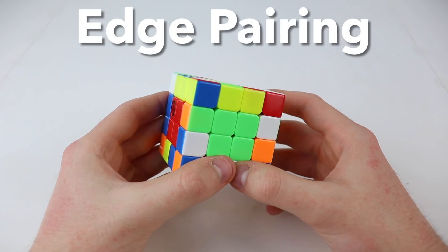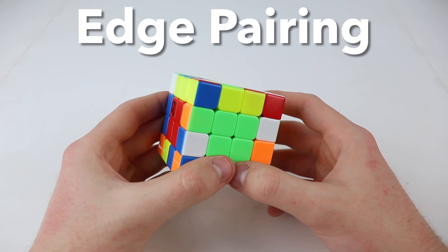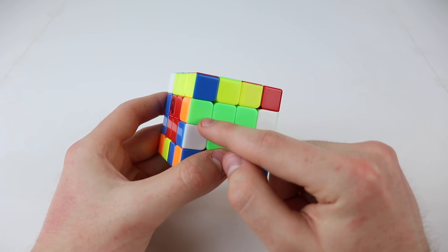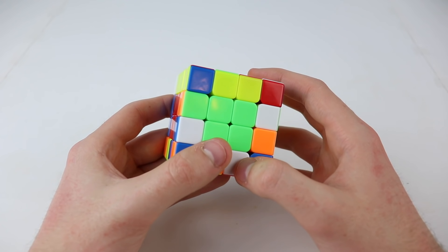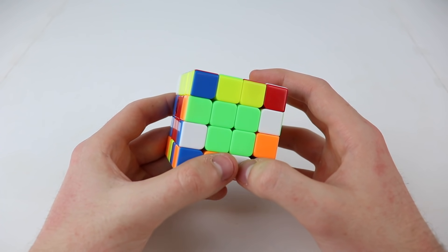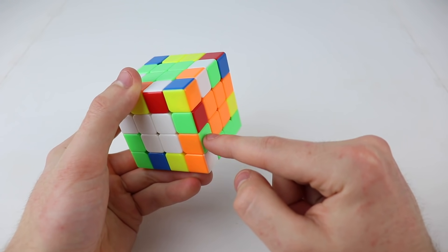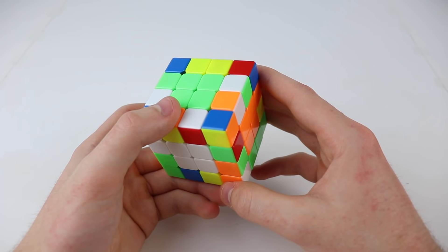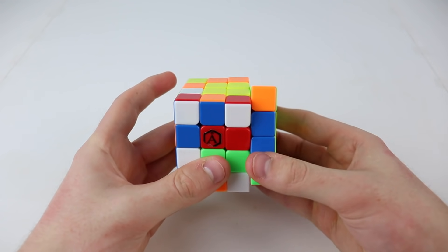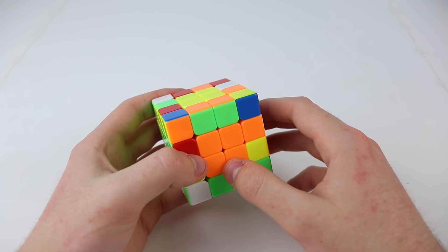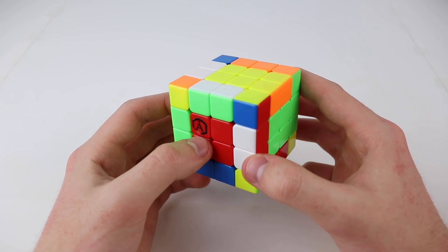The next step is called Edge Pairing. Each edge on a 4x4 has two colors. For example, this edge has green and orange. For any two edge colors, there are exactly two edge pieces that have those colors, and in this step we need to match them together. So here's the other green and orange edge, and I'm going to connect them like this. I need to do that for all 12 color combinations on the cube. Once you're done with that, your cube will look like this.